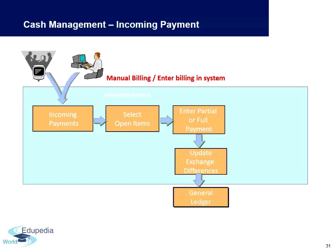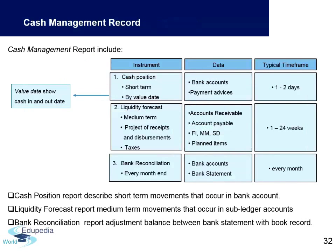On the incoming payment side, the process is the same — updating exchange rate differences and posting into the general ledger. Cash management reports include your cash position, liquidity forecast, and bank reconciliation statements. Bank reconciliation is usually done at month end, using data from bank accounts, payment advices, and balances from accounts receivable and accounts payable.